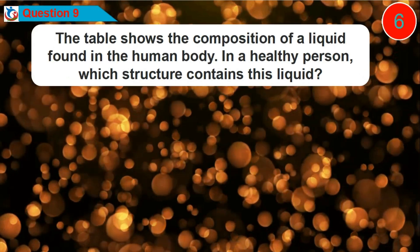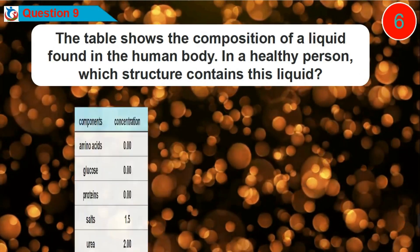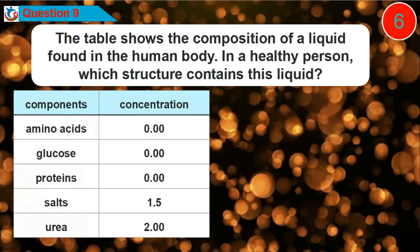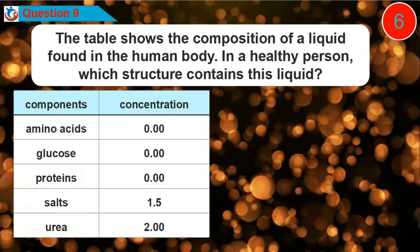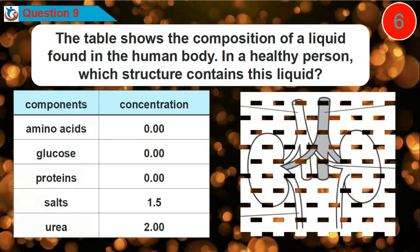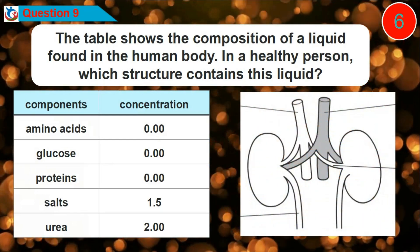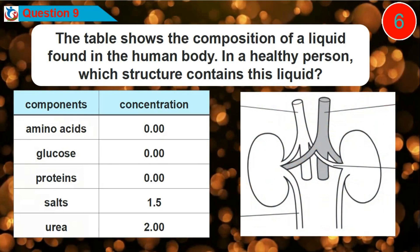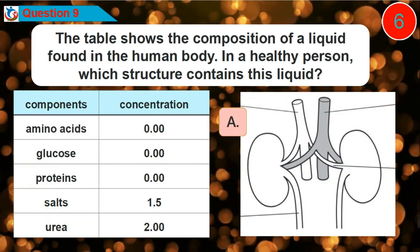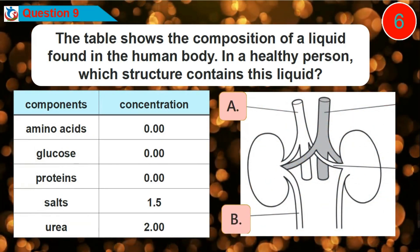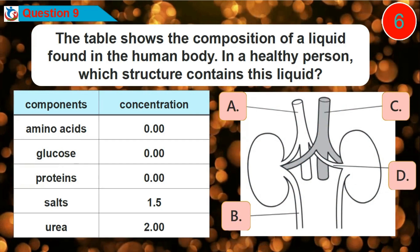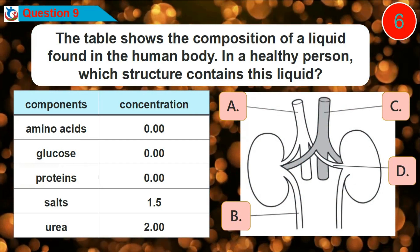Question 9. The table shows the composition of a liquid found in the human body. In a healthy person, which structure contains this liquid? Is it option A, B, C, or D?